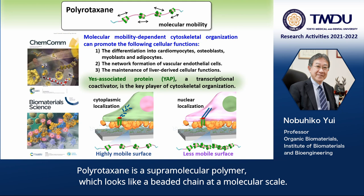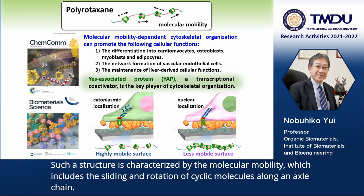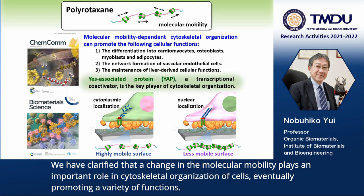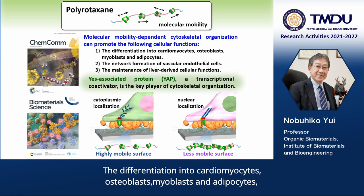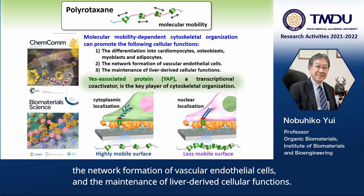Polyrotaxane is a supramolecular polymer which looks like a beaded chain at a molecular scale. Such a structure is characterized by molecular mobility, which includes the sliding and rotation of cyclic molecules along the axle chain. We have clarified that a change in molecular mobility plays an important role in cytoskeletal organization of cells, eventually promoting a variety of functions: the differentiation into cardiomyocytes, osteoblasts, myoblasts, and adipocytes, and the network formation of vascular endothelial cells.